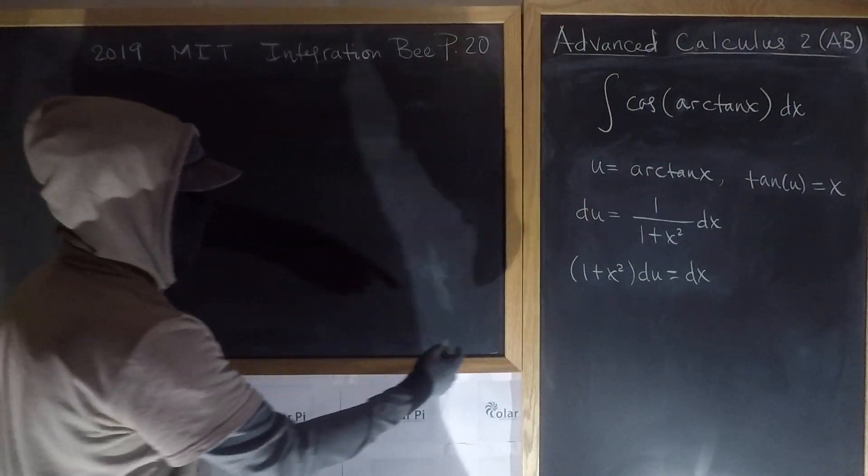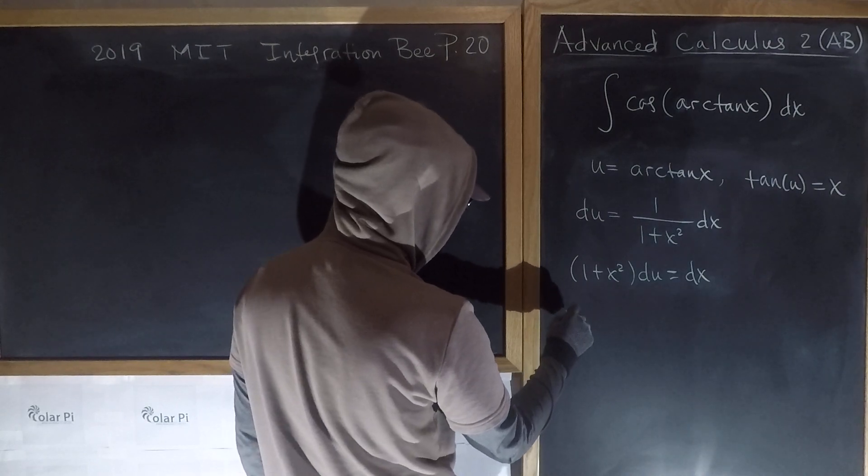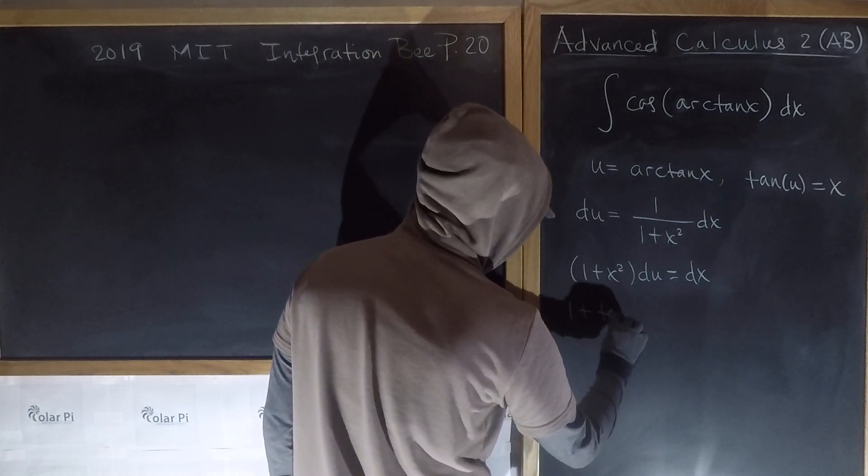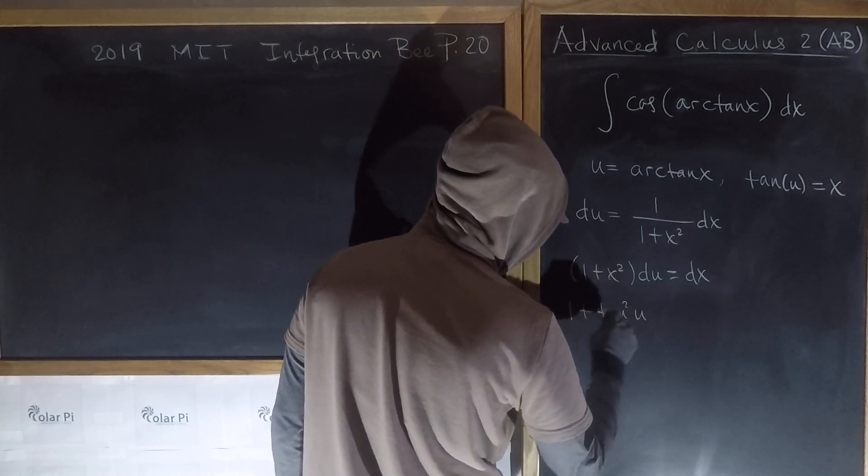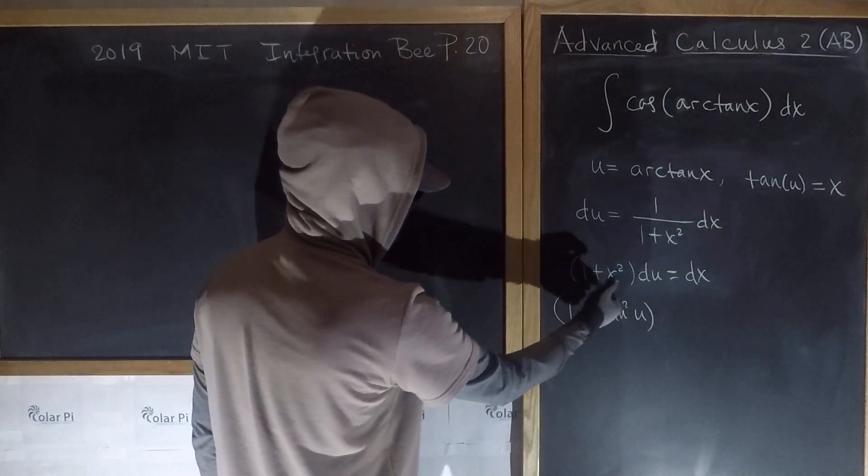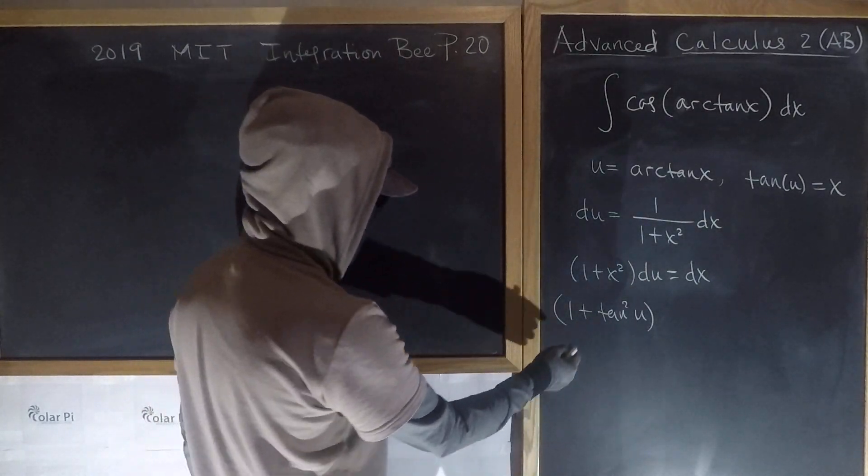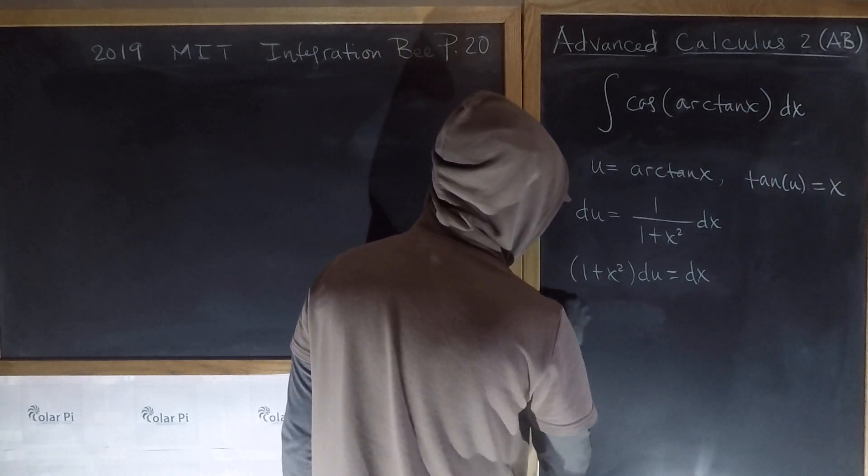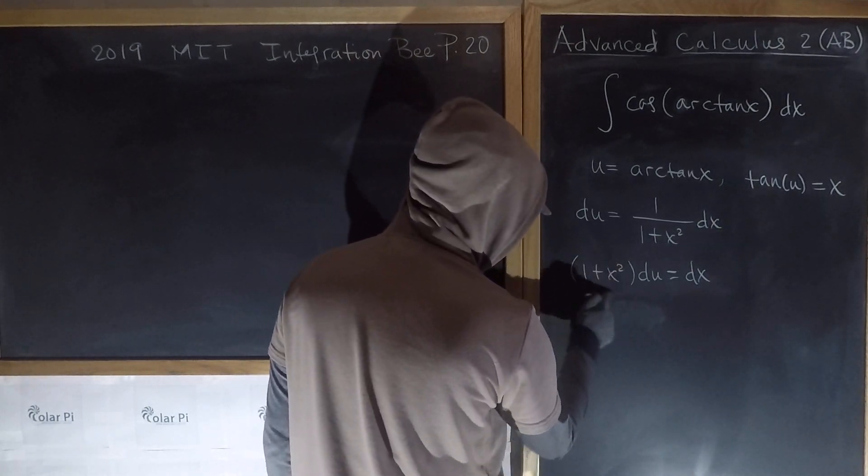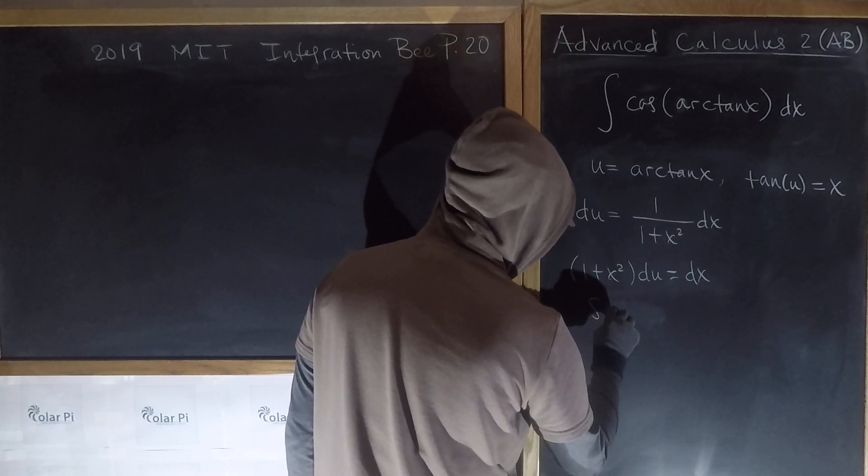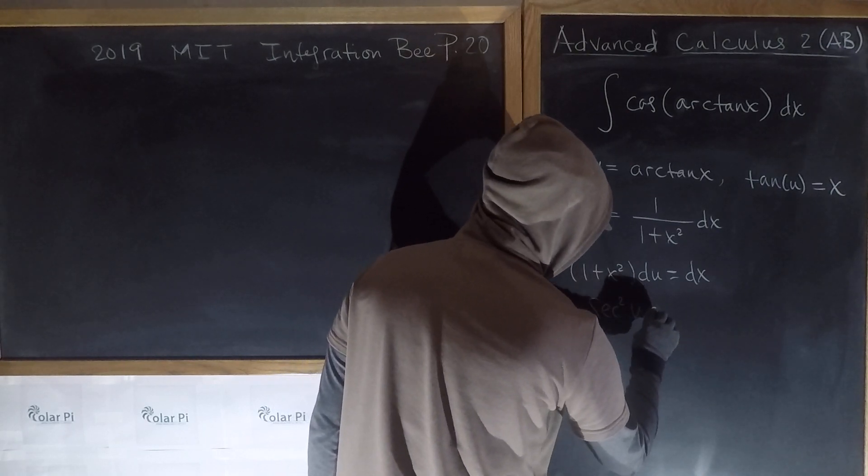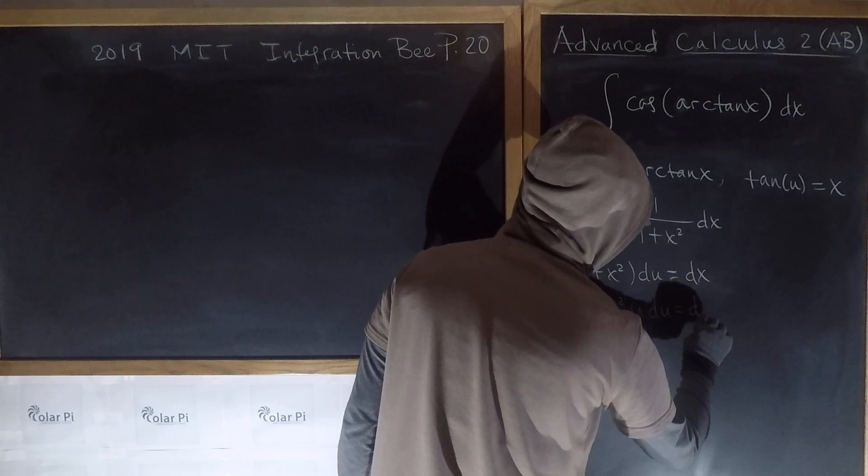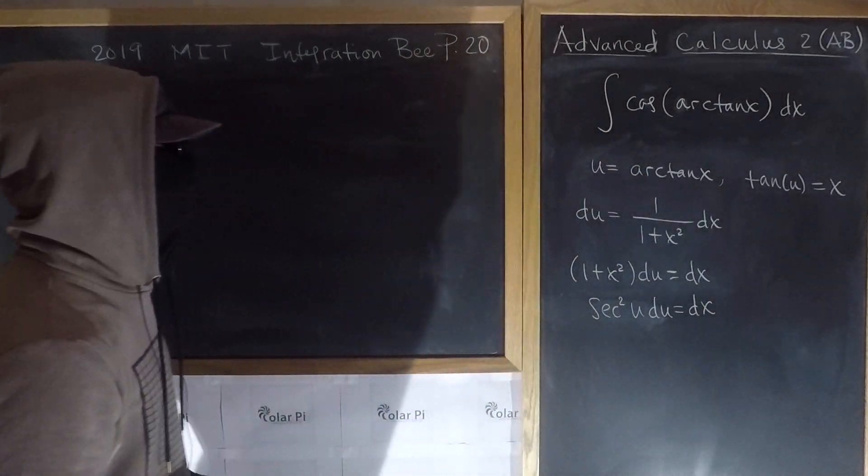So then 1 plus x² is going to be 1 plus tan²(u). This here is 1 plus x², but 1 plus tan²(u) is sec²(u). We remember that from trig. So we see that this is sec²(u) and then du is dx.